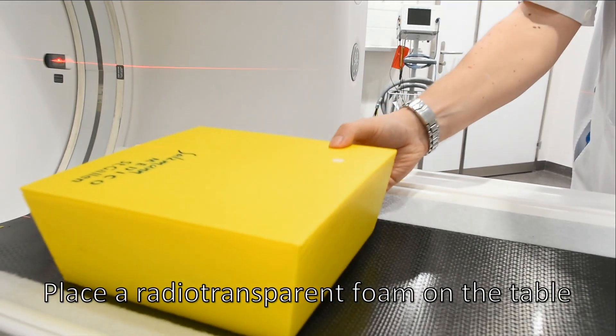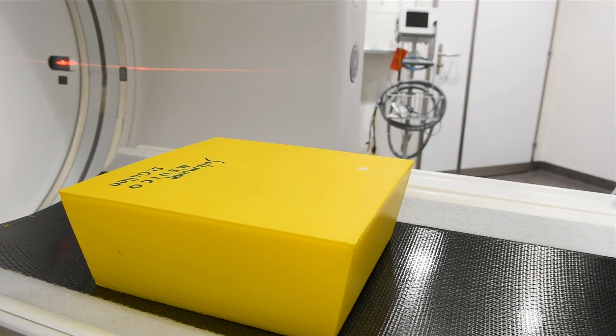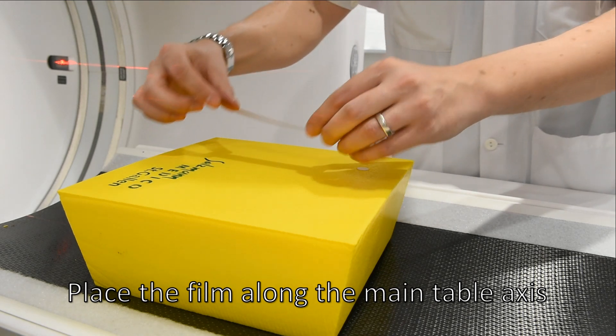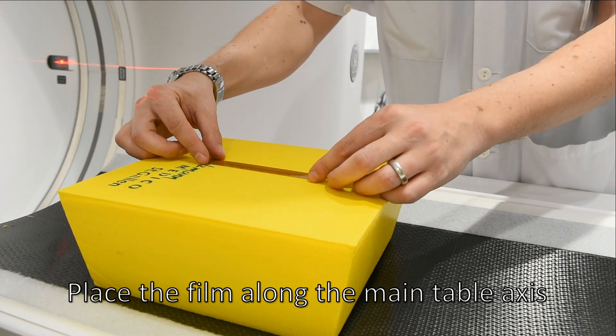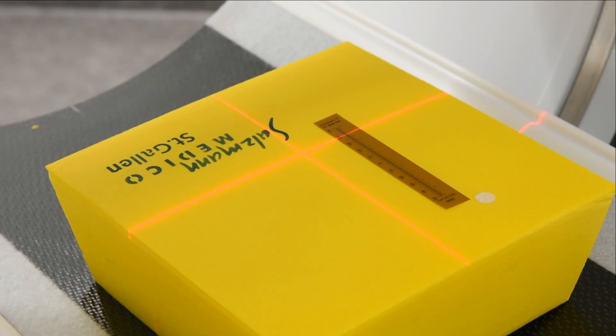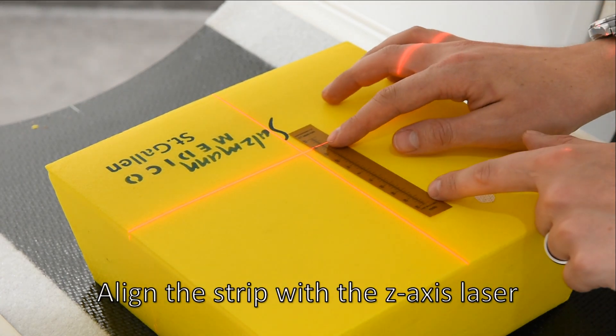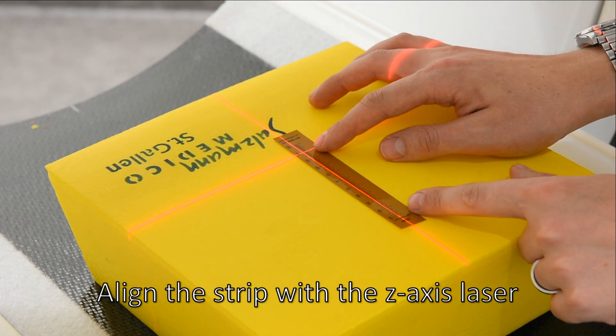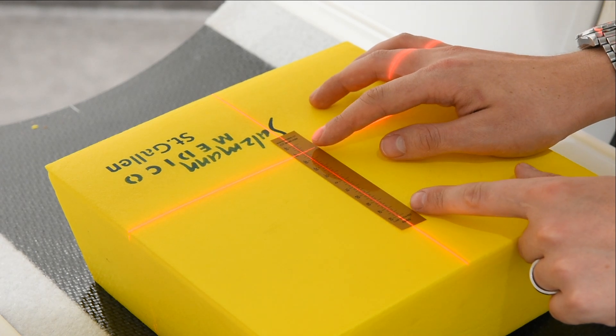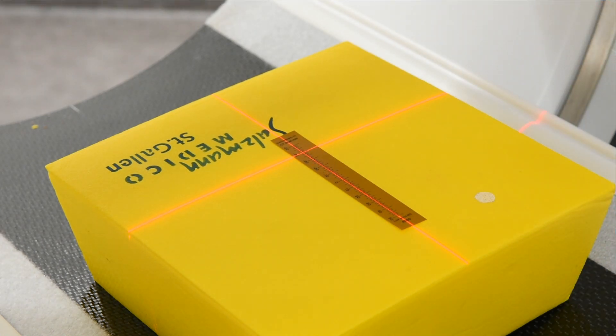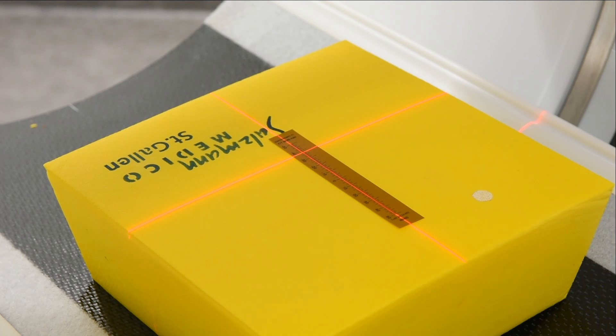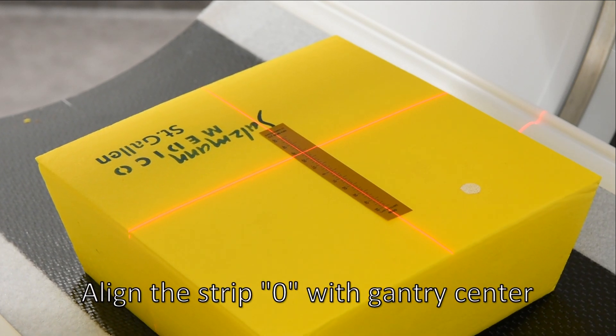Place a radiotransparent foam on the table. Place the film along the main table axis. Align the strip with the Z axis laser. Align the strip zero with gantry center.